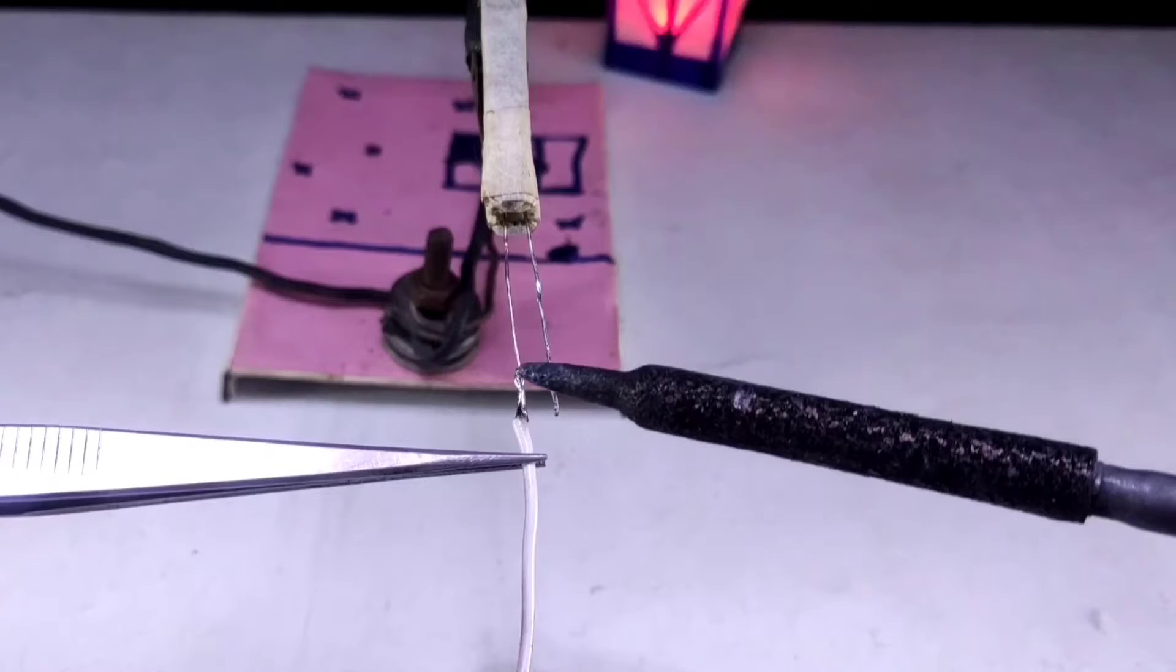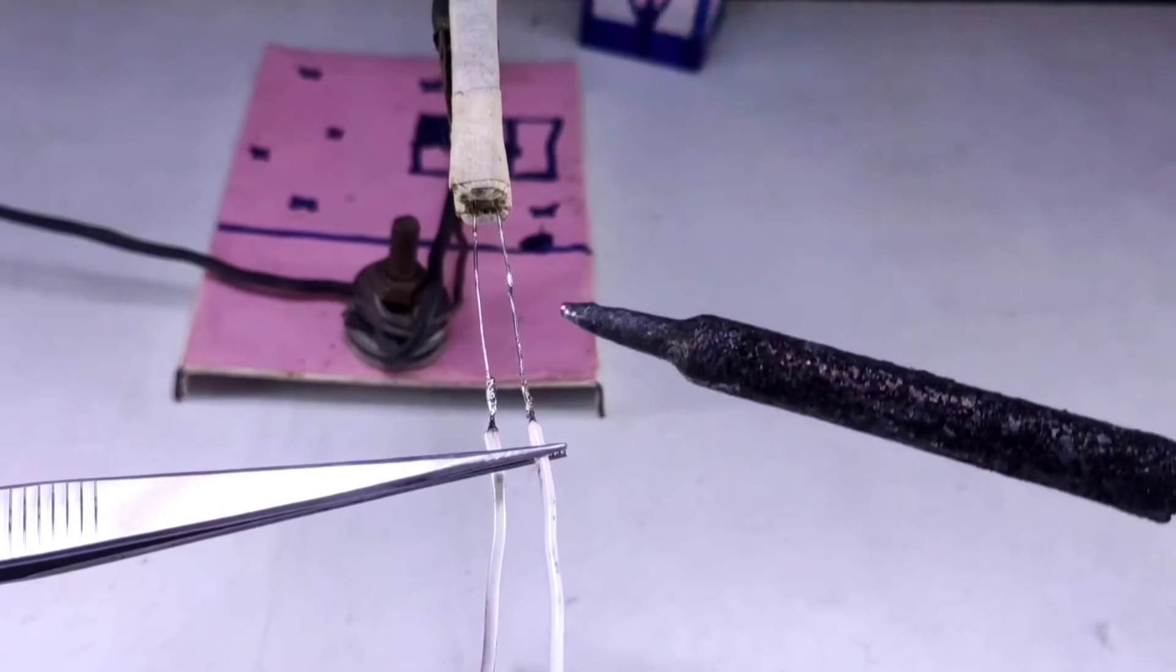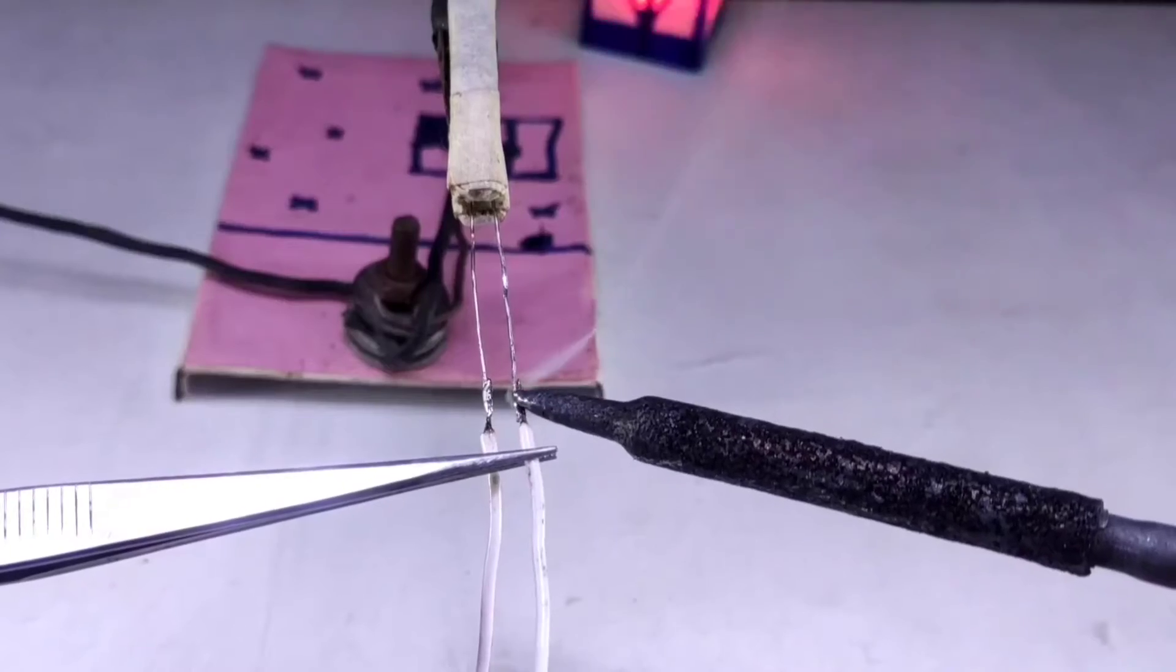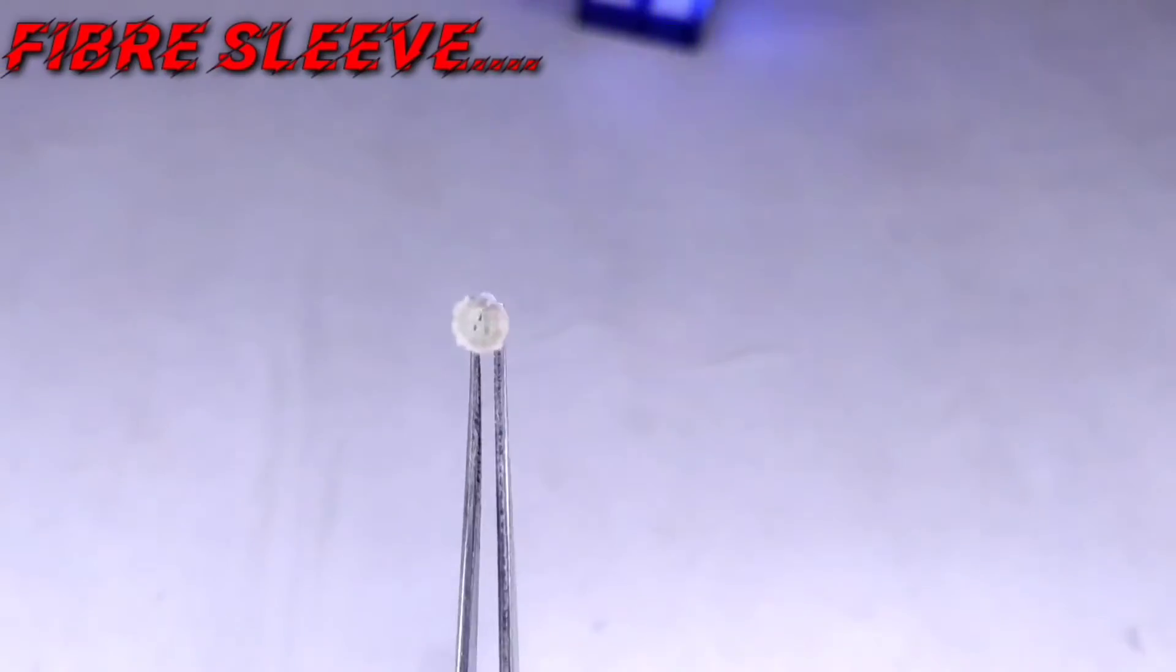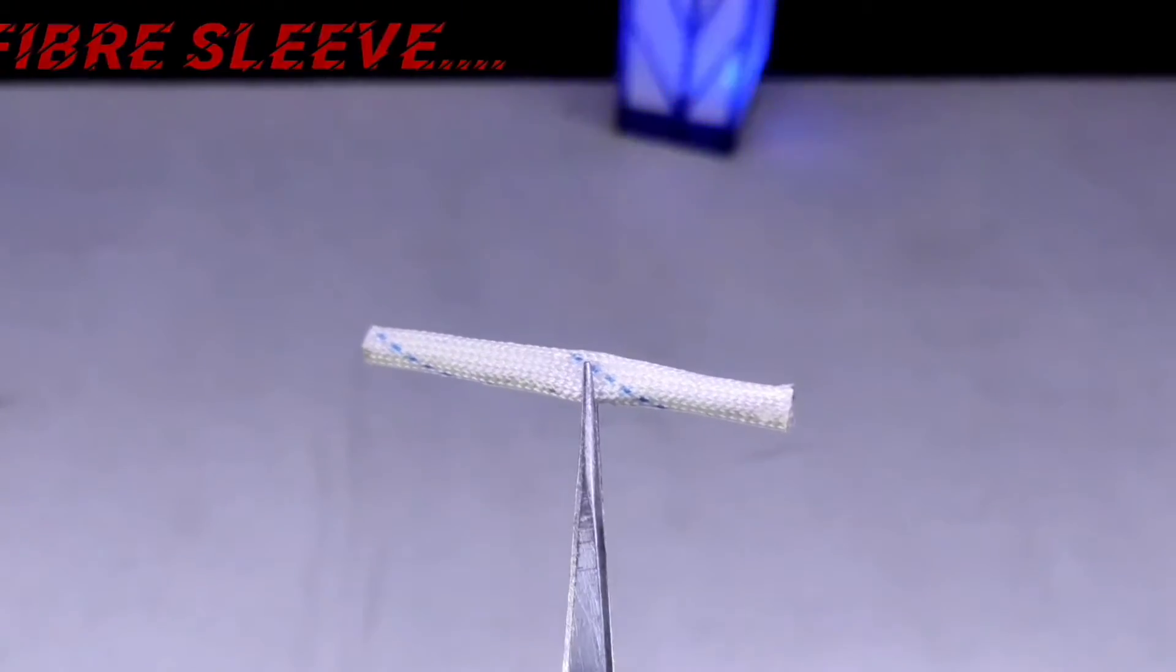To make this automatic holder, I am folding two pieces of wire at the two pins of the LDR. Then I take fiber sleeve to insulate the LDR.